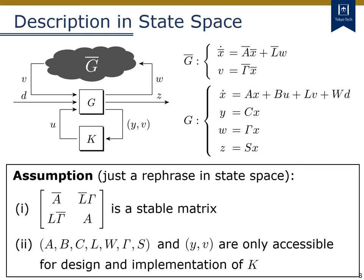First, I describe the retrofit control problem in a state-space form. The internal state of the environment G-bar is denoted by x-bar, and its system matrices are denoted by symbols with bars. In a similar fashion, I give a state-space realization of the subsystem G. The premise of the retrofit control problem can be written as follows. The first item represents the internal stability of the pre-existing system, stated as the stability of the system matrix of the feedback system. The second item represents the accessibility of the local model and outputs for the design and implementation of a retrofit controller K.